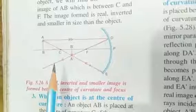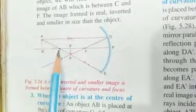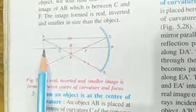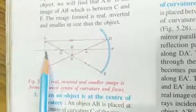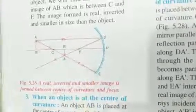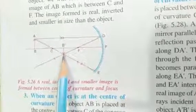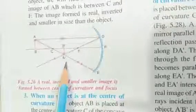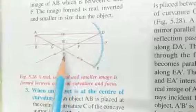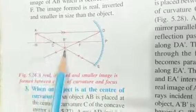Next case: when the object is beyond the center of curvature. The object AB is placed beyond the center of curvature C. One ray is incident on the mirror and reflects back; another ray passes through the center and reflects back. The point where both rays meet is the image point A'B'. The nature of image is real and inverted, and the image is smaller (diminished) than the object.